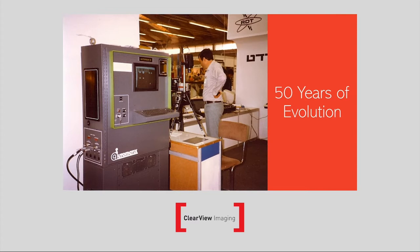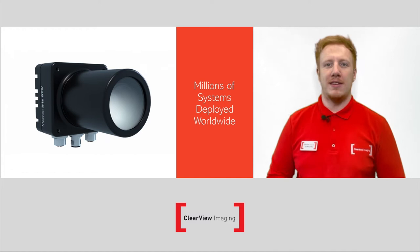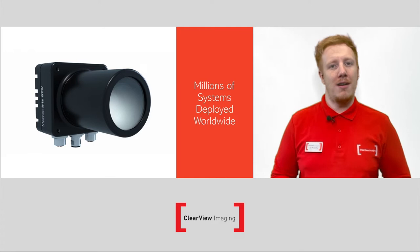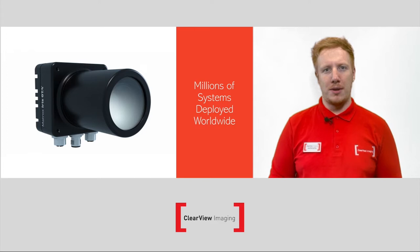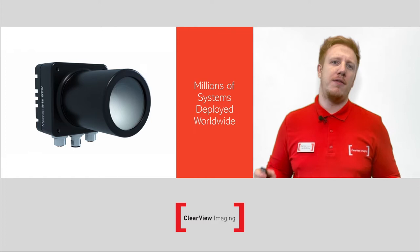Vision systems have been around for a long time. You can see here one of the first vision systems ever developed, looking back 50 years ago. As you can imagine, it was incredibly expensive, extremely large and terribly slow. If we think about all the incremental changes in technology since then, it's quite incredible to think that the power and abilities in vision systems have increased so much, to the extent of being able to do all of that within a smart camera that could literally be held within my hands. We are at the point now where we can say there are millions of systems deployed all over the world. This is now proven technology that has evolved over 50 years at a rapid pace.